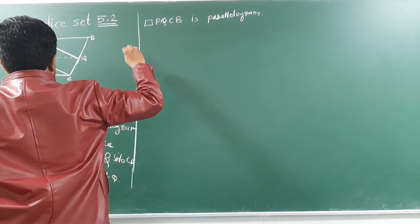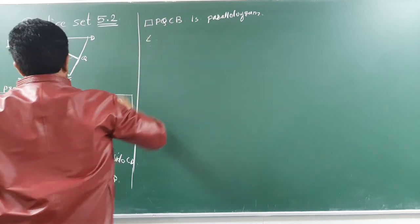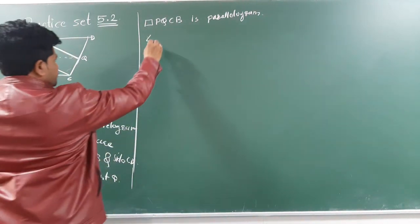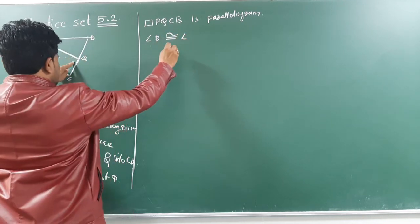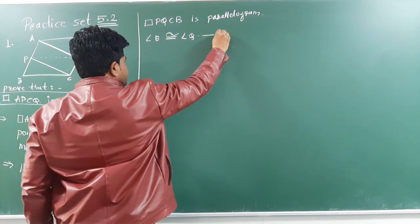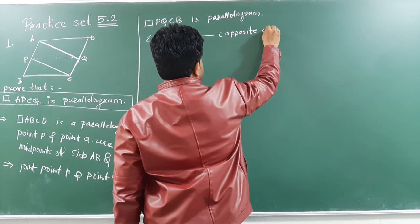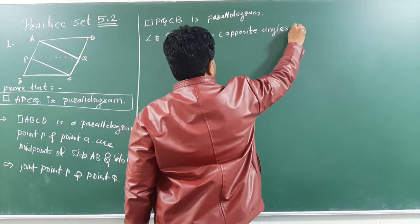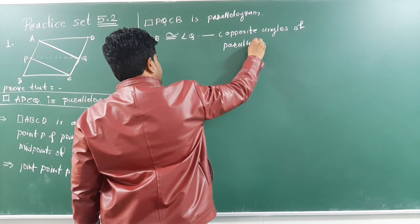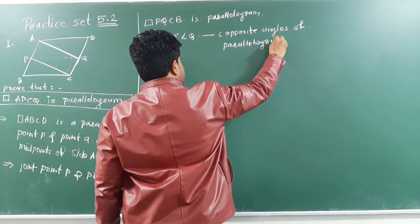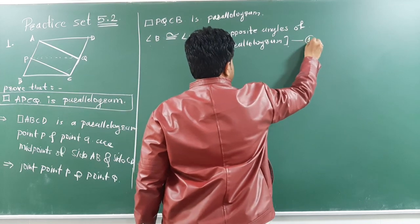Now, angle P will be congruent with angle Q, because opposite angles of a parallelogram are congruent. This is equation number 1.